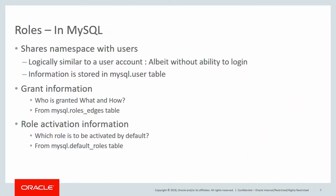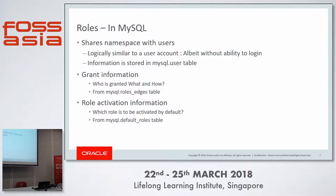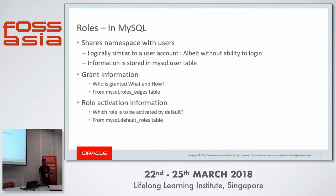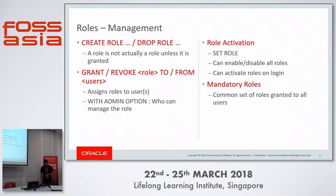How do we implement roles in MySQL? Roles share their namespace with users, meaning if you have a user named 'foo', you can't have a role with the same name — both are stored in the same table and the clash will prevent you from creating the role. We store grant information indicating which role is granted to which user or role, and we also store role activation information that enables a role by default for any user. You can use CREATE ROLE to create a role, which is essentially a sugar-coated way of CREATE USER — it creates a locked user account. DROP ROLE removes it. What makes an authorization ID a role is the GRANT or REVOKE.